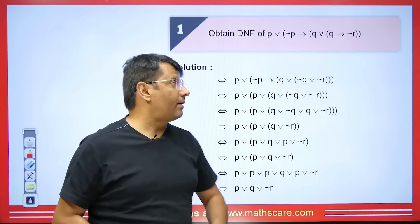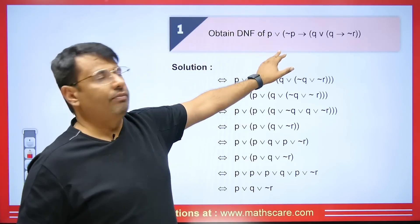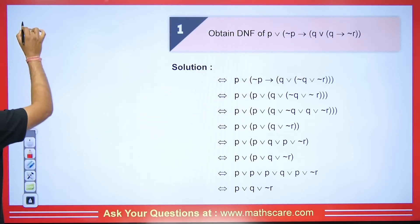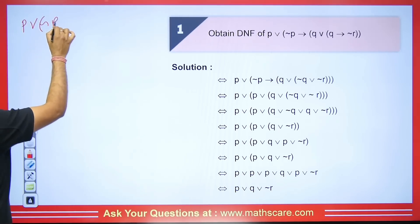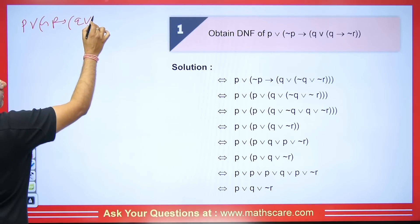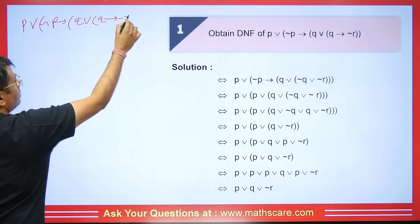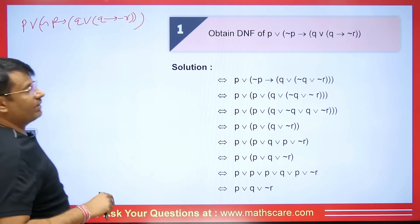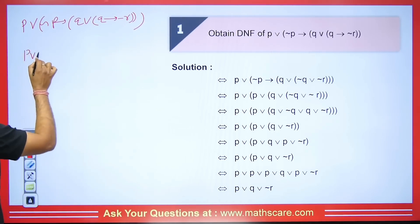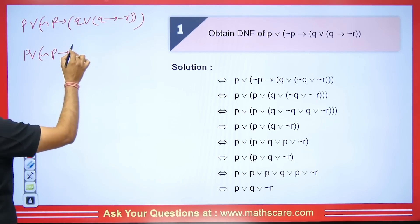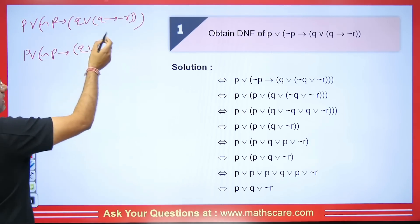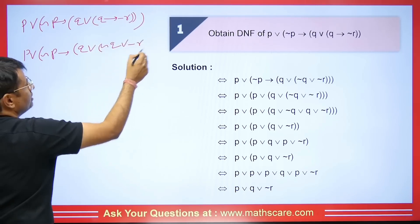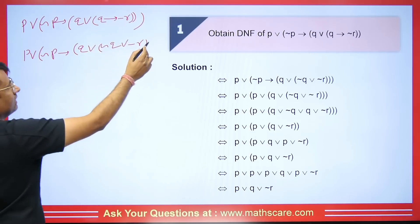We have the first practice question: find the disjunction normal form. The question has P OR (negation of P implies Q) AND (Q implies negation of R). First, we will handle the implication. Here I am removing this implies: whenever we remove implies, negation comes on the left side. So this will be negation Q OR R. The sign in the middle is removed and it becomes R.